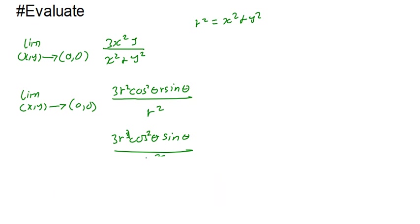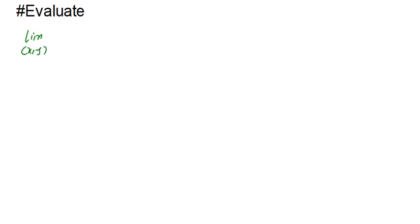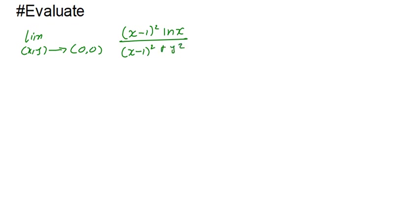For the last example, we evaluate the limit as (x, y) → (0, 0) of (x − 1)² · ln(x) / ((x − 1)² + y²). The answer is zero, and I'll show why using the squeeze theorem. The squeeze theorem states that if f(x) ≤ h(x) ≤ g(x) and f and g have the same limit, then h has that same limit.